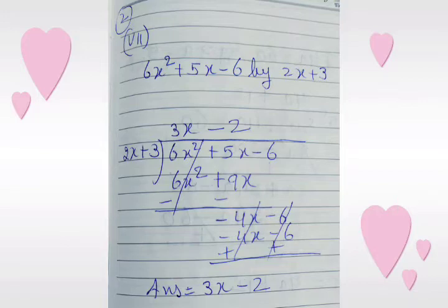Now we copy down the third term, that is minus 6. We multiply 2x plus 3 with minus 2 and we get minus 4x minus 6. We change the sign of the last line and then we can cancel both terms. The answer is 3x minus 2.